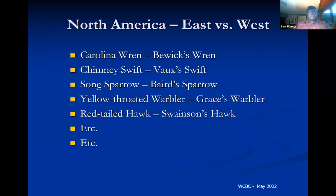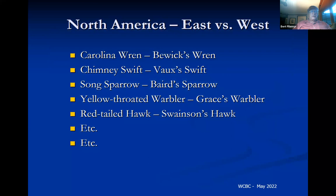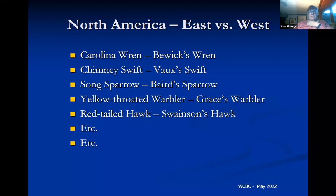Eastern birds usually have descriptive English names — Carolina Wren, Chimney Swift, Song Sparrow — or place names like Mississippi Kite and Virginia Rail. Honorific apostrophe names are fairly rare among eastern birds. It was the western birds where, as ornithology moved west, scientists began naming birds for friends, colleagues, or patrons. Since Carolina Wren and Chimney Swift were already taken, they named the western counterparts Bewick's Wren and Vaux's Swift. Most of the apostrophe names are out west.